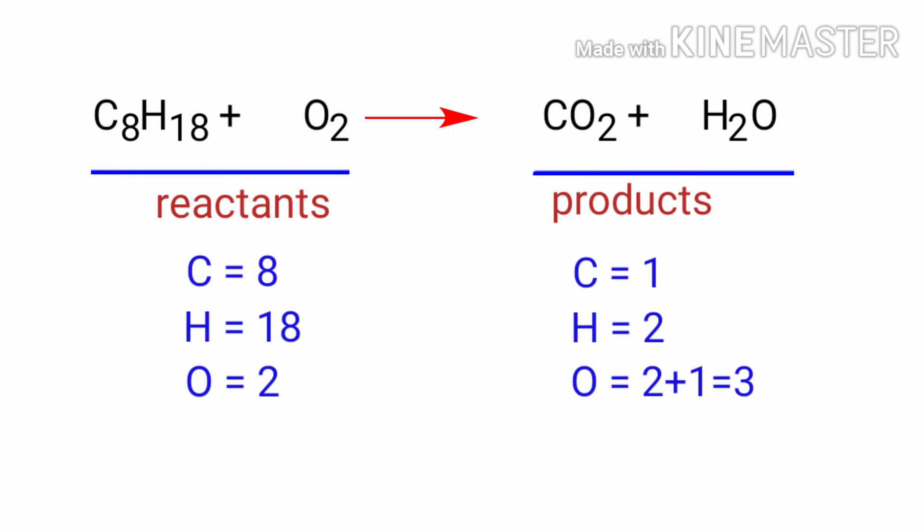To balance the chemical equation, we need to make use of coefficients. A coefficient is a number that we place in front of a chemical formula.